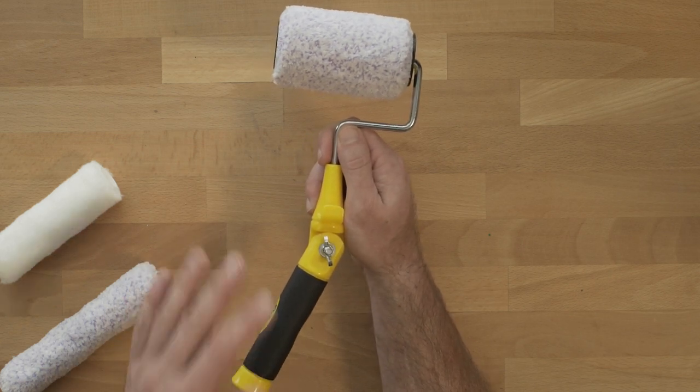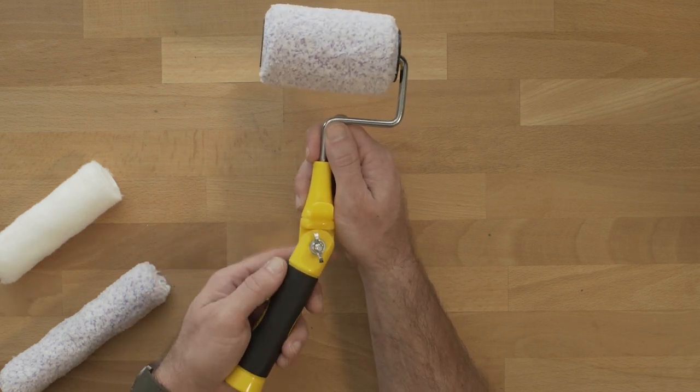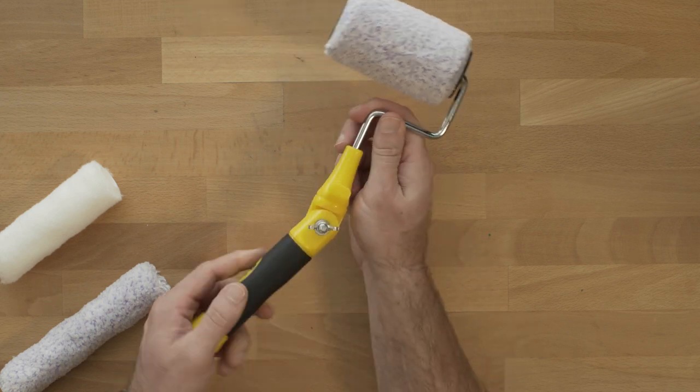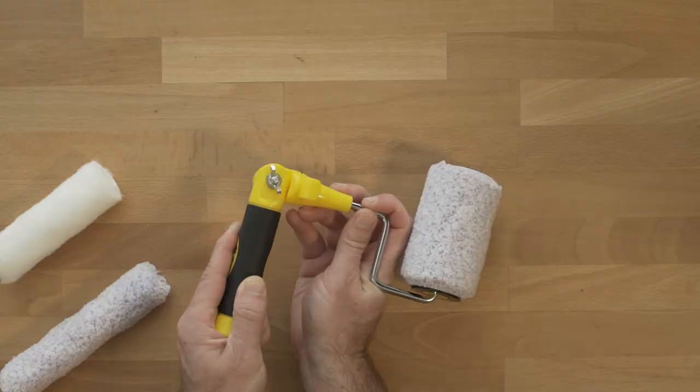But here's where Hyde's mini frame really stands out. If you loosen this wing nut right here, you can create an angle in your handle all the way up to 90 degrees both ways.